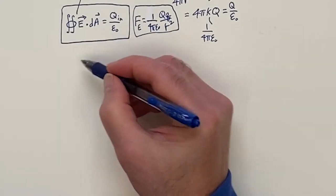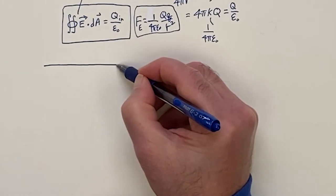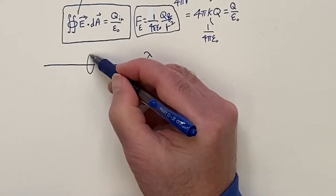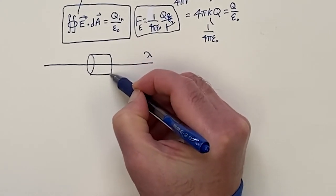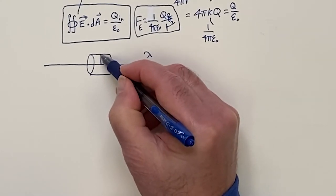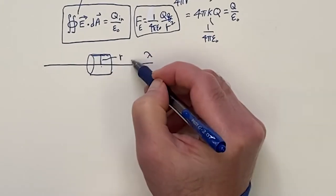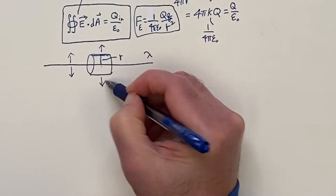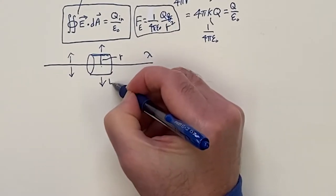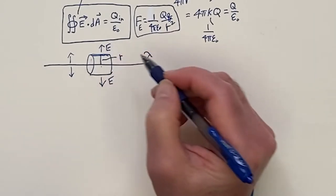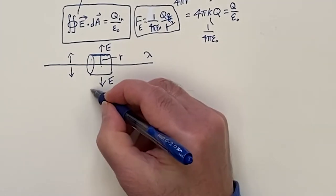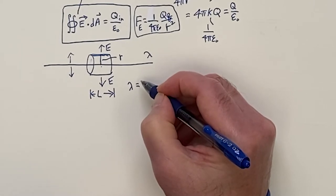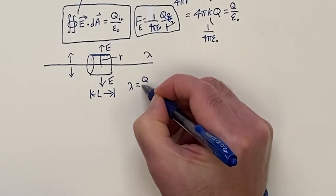To show the power of this law, suppose we had a line of charge with density lambda — charges spread along a line. If we make an enclosure — a can — at distance R away, the electric field is going to be pointing away from the central line. The electric field points perpendicular to the line at all points. The charge density lambda is defined as charge Q divided by length L — so you have Q charge in a given distance.